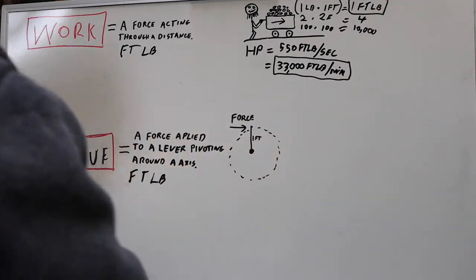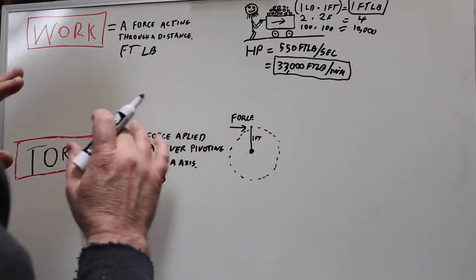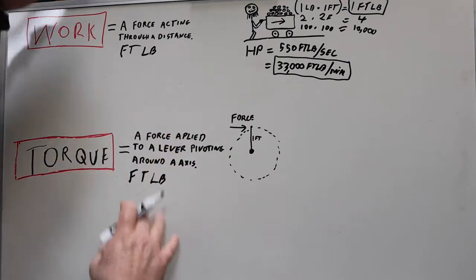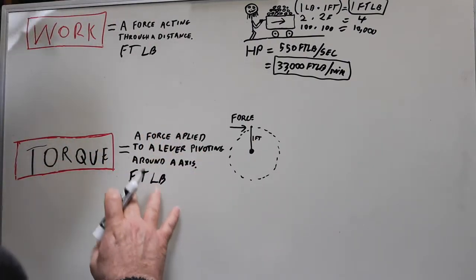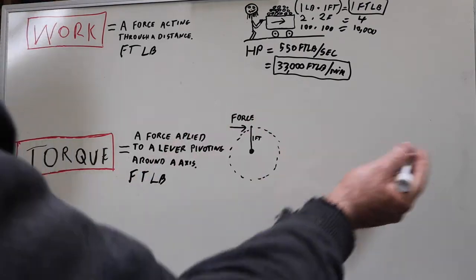So this is the factor we want to use - this 33,000 foot-pounds per minute. So how does torque figure into this? Well, this is where things get confusing because you have two different things that are called the same, they have the same name, but they're two fundamentally different concepts.